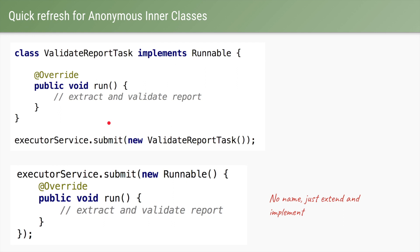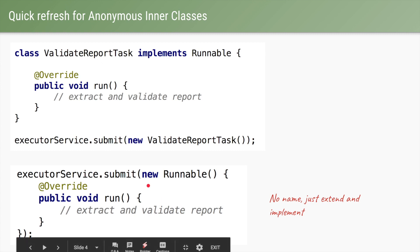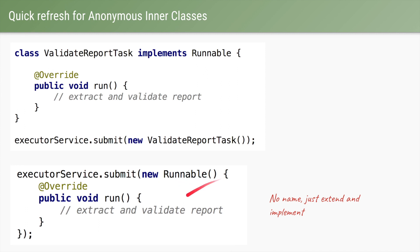Let's start with a quick refresh for anonymous inner classes. Say we have a class called ValidateReportTask that implements Runnable. We'll use some kind of thread pool and submit this new task by creating an instance of that class. We can avoid declaring this class itself if we use an anonymous inner class — instead of declaring ValidateReportTask outside, we directly use the anonymous inner class syntax, declaring the interface we're going to use, putting in curly braces, and using the same code as before.